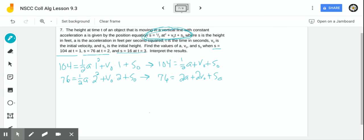And the third thing we're given is that the height is 16 after three seconds. So we plug that in, one half A times three squared plus V O times three. So we have 16 equals nine halves A plus three V O plus S O.